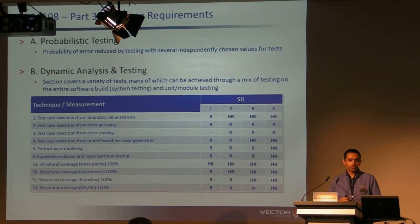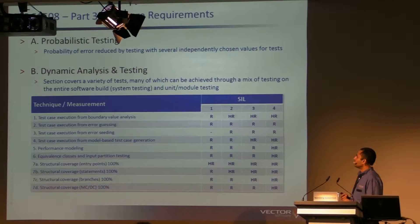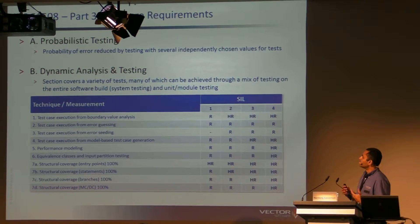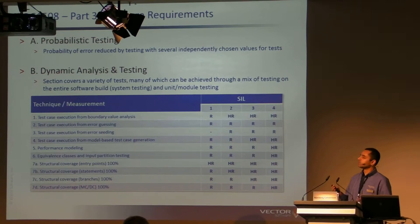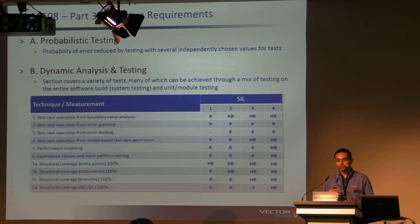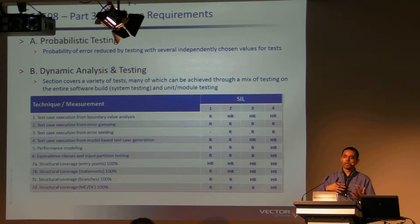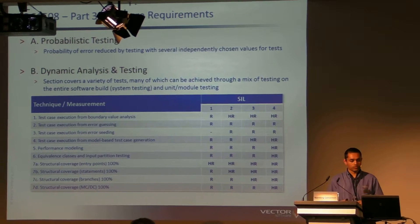So if we talk about probabilistic testing, here we're talking about the probability of error being reduced by testing with several independently chosen values for tests. So we're choosing values, based on your design, that may have an influence in the way that your software behaves.